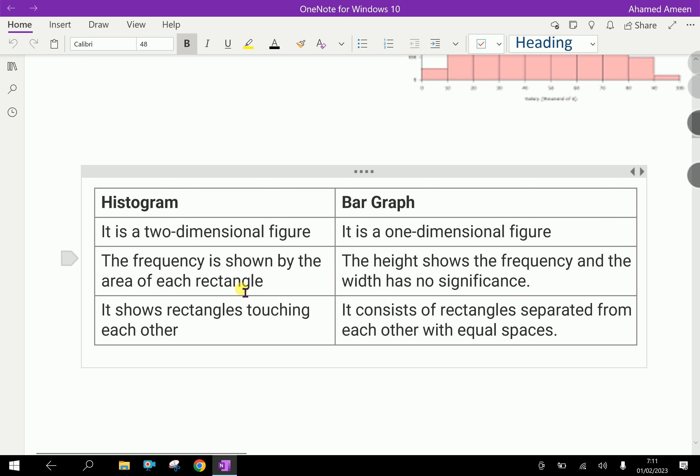But in Histogram, the width has some uses, some meaning. In Histogram, it shows rectangles touching each other. In bar graph, it consists of rectangles separated from each other with equal spaces. These are the major differences between Histogram and bar graph.